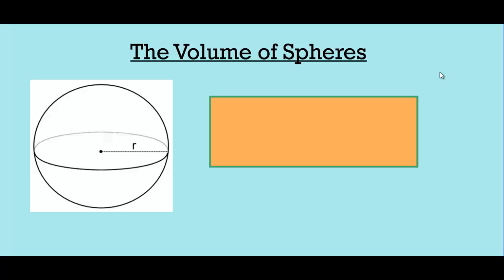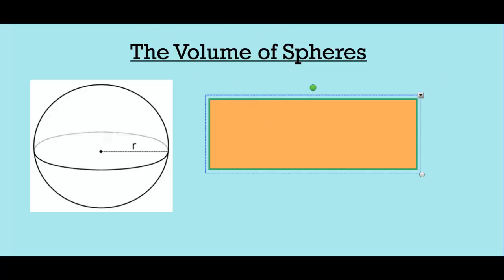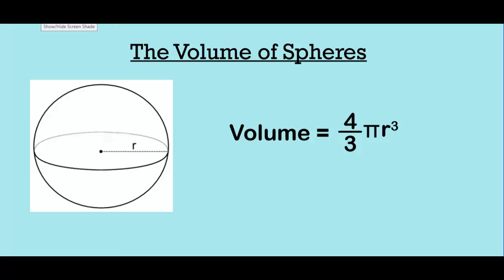And although the area of a circle is πr², the volume of a sphere is a little bit different. We still use π in the formula, but our formula for the volume of a sphere is 4/3 multiplied by π times r³.